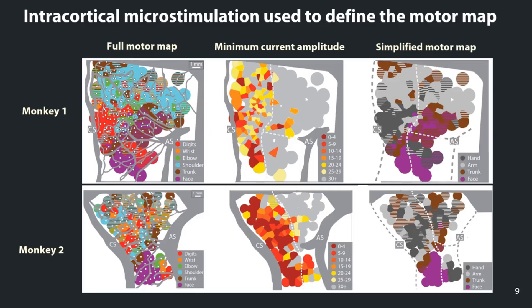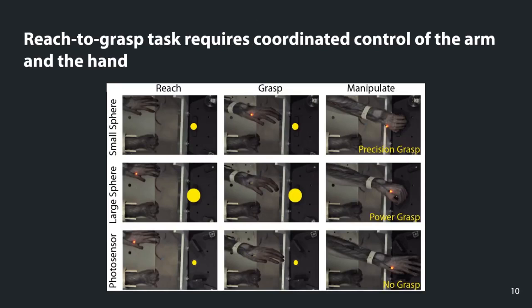Due to the visibility of cortex, we have a reference to the blood vessel map, which we can use to place electrodes at various locations in M1 and PMD and use intracortical microstimulation to evoke movements to define a detailed motor map. We have two rhesus macaques trained to perform a reach-to-grasp task in which the monkeys are required to reach and grab either a small sphere, eliciting a precision grip, a large sphere evoking a power grip, or just reach for a photosensor without grabbing it — a condition with no grasp.